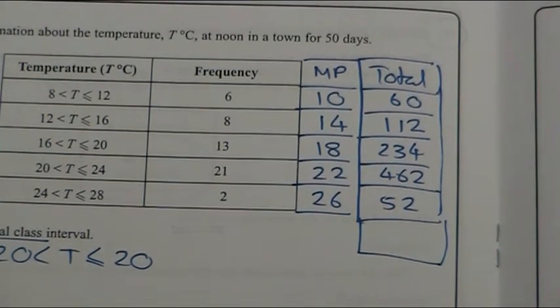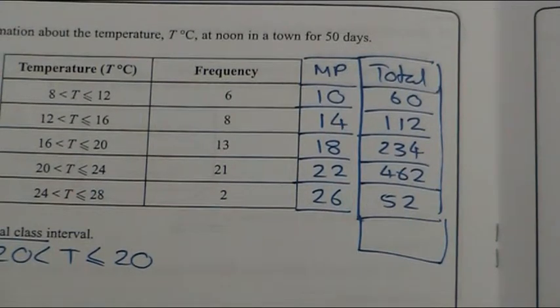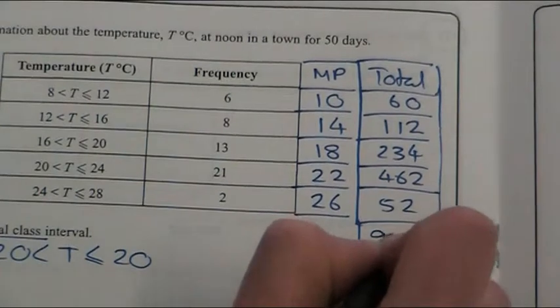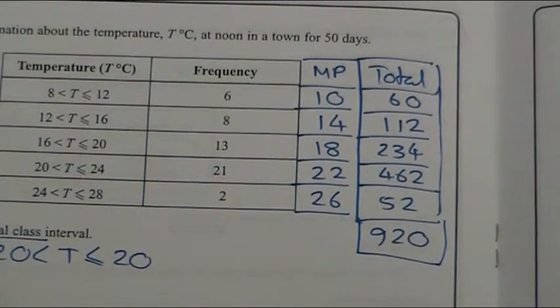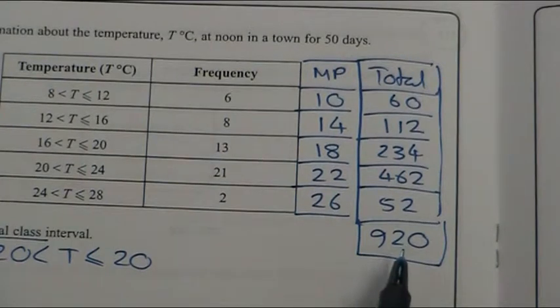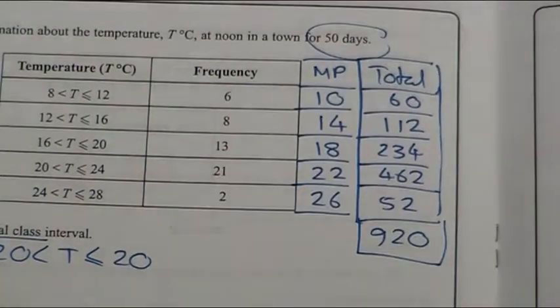So, let's add these up, which is 920. All the temperatures was 920. And we need to now divide that by how many days there were, which we're told up here is 50.